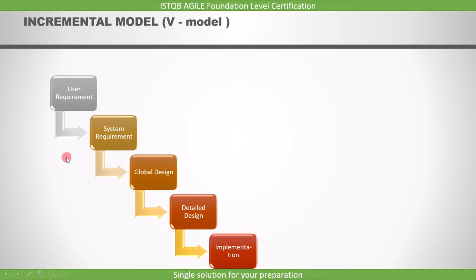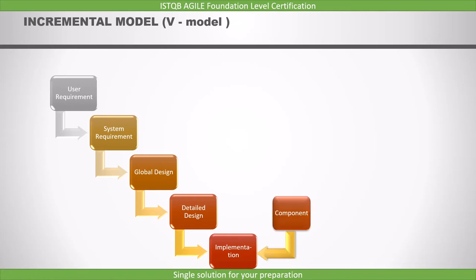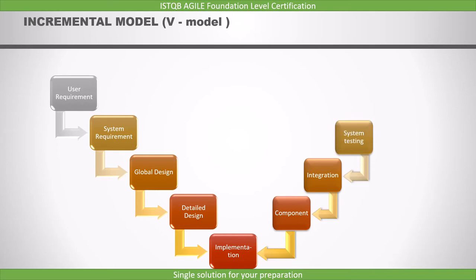These are the steps in this development activity: you get the user requirement, create the system requirement, then develop the global and detailed design, and finally you implement the code. Once the implementation is over, the software is ready. Then we perform component testing on it. Once that is done, we perform integration testing. After integration, we will do system testing. And finally, the acceptance testing.